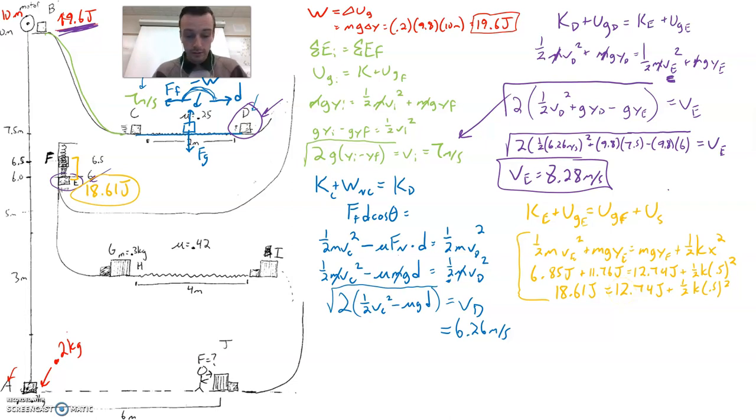18.61 is our total energy minus the gravitational potential energy we have at that point is 5.87. That's going to get multiplied by 2 and divided by 0.5 squared in order to solve for K, the spring constant. So 2 times 5.87 divided by 0.5 squared is going to get us a spring constant K of 47 newtons per meter.